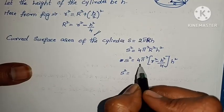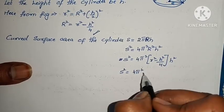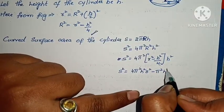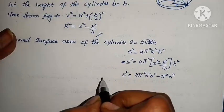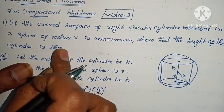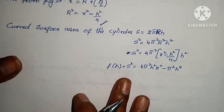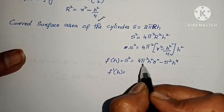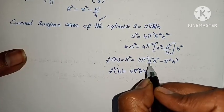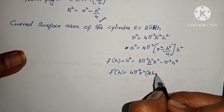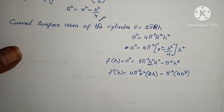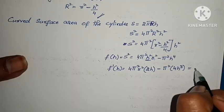S² = 4π²H²(R² - H²/4). We convert this to a function of H: f(H) = 4π²R²H² - π²H⁴. To find f'(H), differentiating: f'(H) = 8π²R²H - 4π²H³. Setting f'(H) = 0 to find the critical value of H.